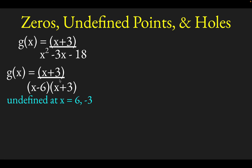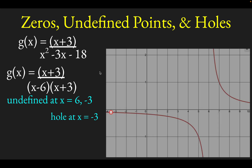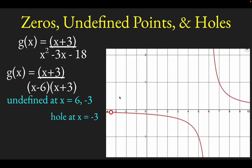Much like the last example, we have a factor of x plus 3 that also appears in the numerator, so there's going to be a hole at x equals negative 3. Looking at the graph, the function is indeed undefined at x equals 6 — it blows up to positive infinity coming from the right and goes to negative infinity coming from lower x values. And at x equals negative 3, you have this hole, this one point where the function is not defined.